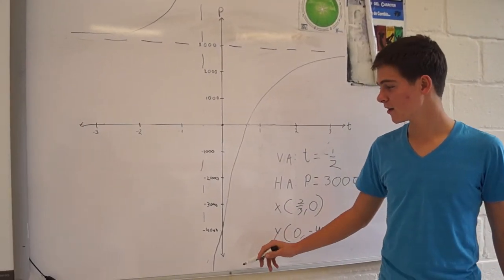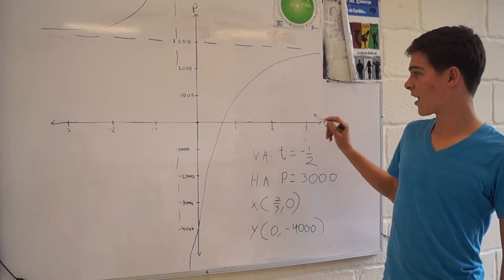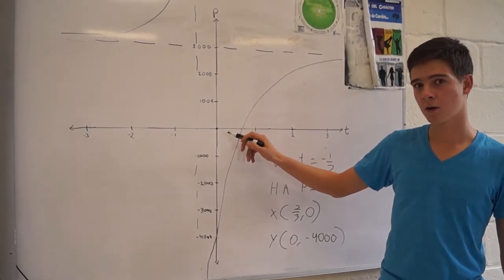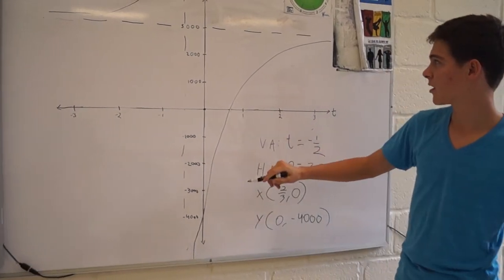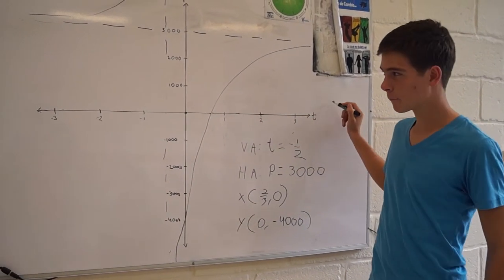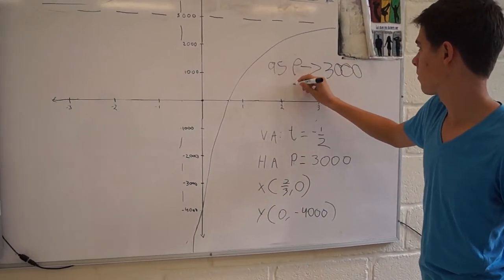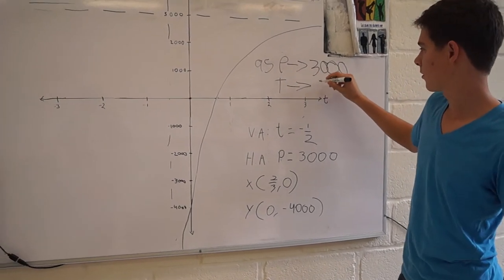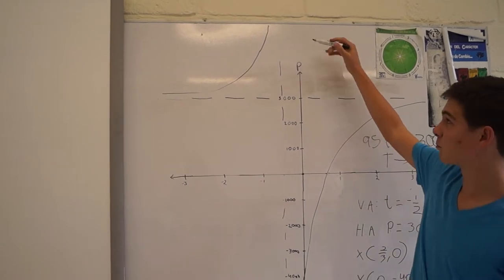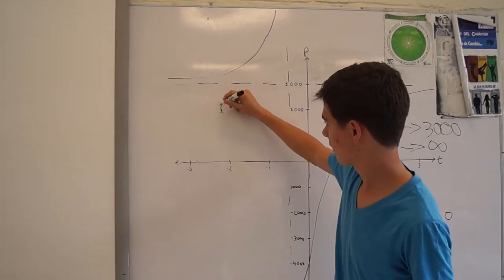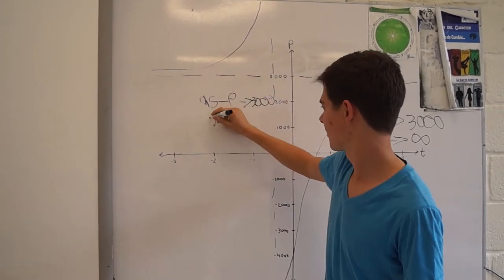Now, we can see that as population reaches 3,000, the time, that is at T equals zero, which will be the year 2000, it will go to infinity. And now, for the other part of the graph, we can see that as population decreases, as T goes to minus infinity, P will go to 3,000.